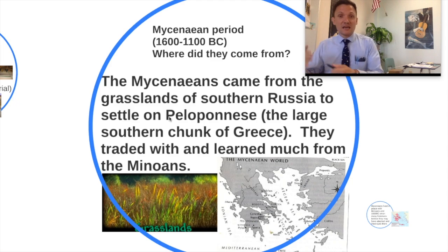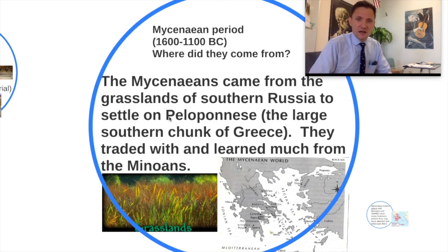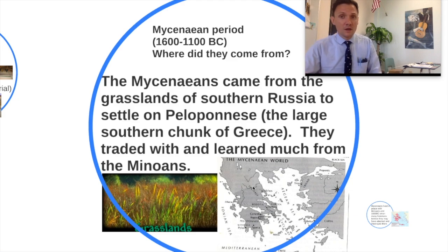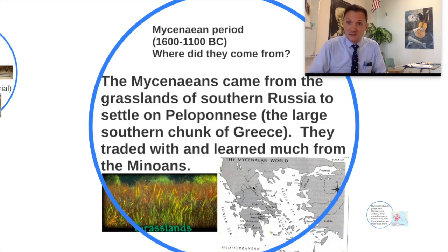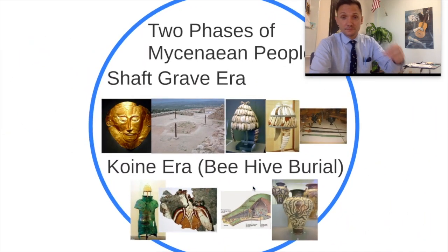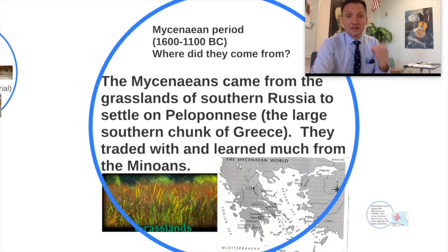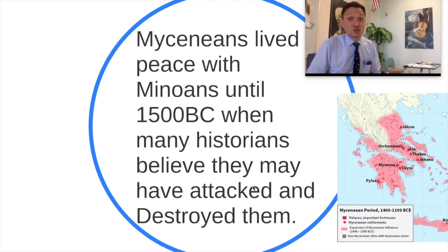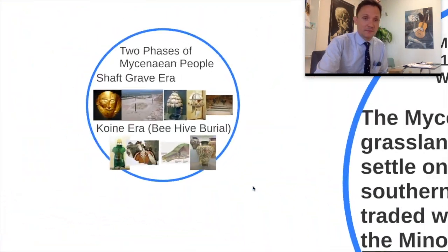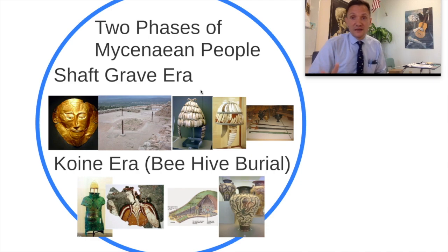The Mycenaeans originally came from the grasslands of southern Russia. They were a migratory, Paleolithic-style people, and from southern Russia they started to migrate down. They wandered and found a home on the region of Greece called the Peloponnese — that's the large southern chunk I'm going to show you in a moment. They're going to trade with the Minoans and learn a ton from them — architectural principles and a lot of different odds and ends. But what they had that was much more advanced than the Minoans was their military. The Mycenaeans lived in peace with the Minoans up until about 1500 BC, when many historians believe they attacked and destroyed them. We believe that the Mycenaean people have two phases of their culture.